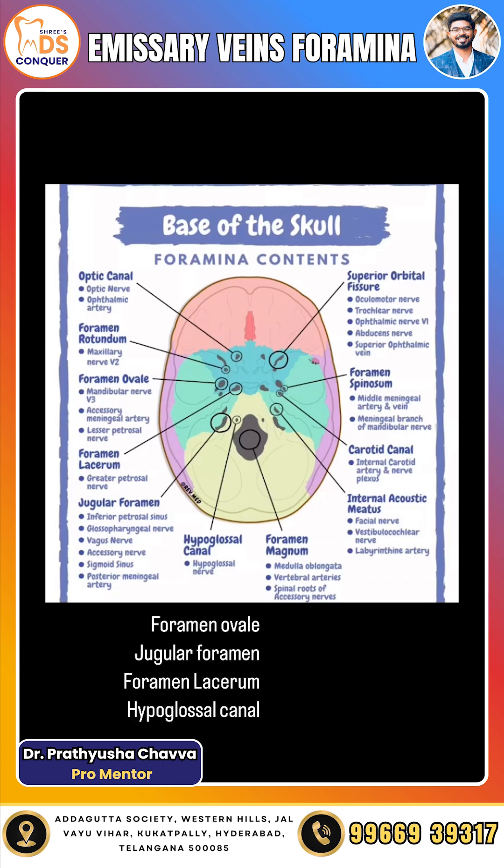So to summarize, the emissary veins pass through the parietal foramen, mastoid foramen, foramen ovale, jugular foramen, foramen lacerum, and hypoglossal canal. It's an important point to remember — please do note it down. Thank you.